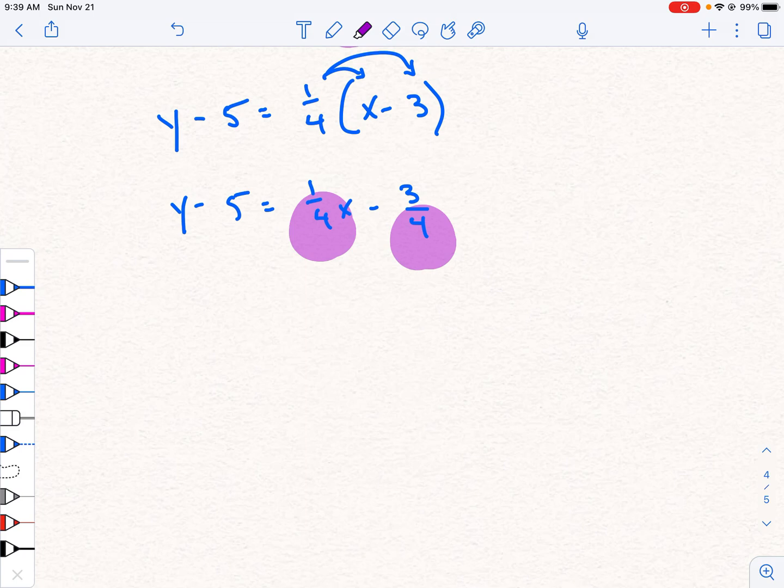Now, in this one, my denominator is the same number. It's the number 4. So what I'm going to do is I'm going to multiply both sides by the number 4.